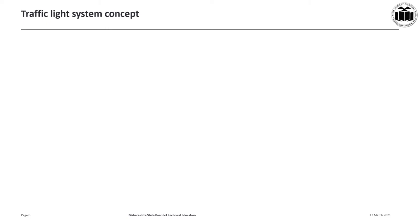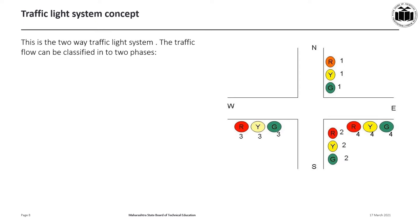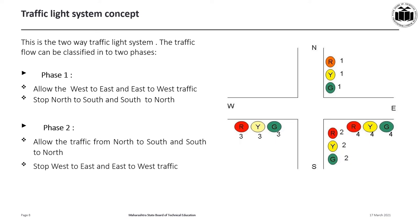Let us understand the traffic light system concept. We have taken four directions: north, south, east, and west. On every direction, three traffic lights are shown — red, yellow, and green. This is a two-way traffic light system and the traffic flow can be classified in two phases. In phase one, traffic from west to east and east to west is allowed, while traffic from north to south and south to north is stopped. In phase two, traffic on north to south and south to north is allowed, whereas traffic from west to east and east to west is stopped.